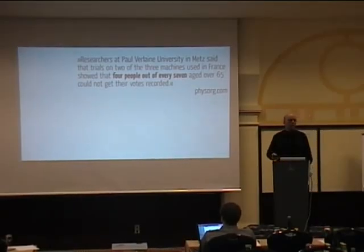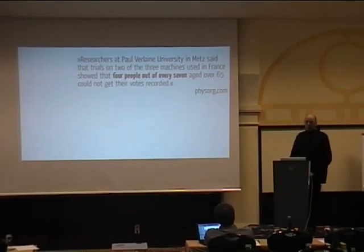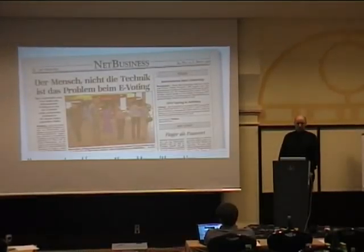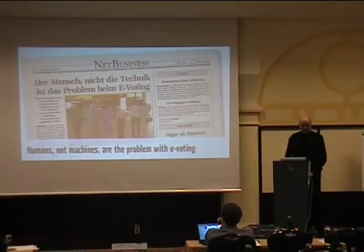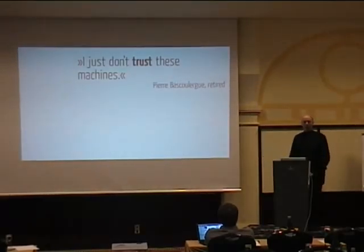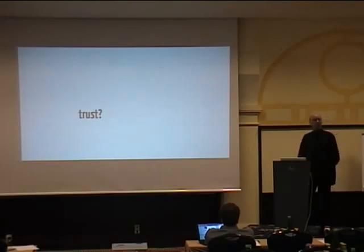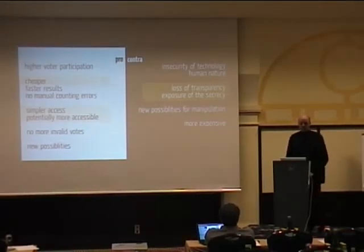Of course, this is a problem we could potentially fix — we could build machines and make it very easy to vote. In response, an Austrian newspaper titled: 'Humans, not machines, are the problem with e-voting.' It says in fine print that electronic voting systems have worked well during the US election, but skepticism still prevails. This is reflected in the retiree who says, 'I just don't trust these machines.' That's a very interesting point — why do we have to speak of these machines in terms of trust? Why do we have to trust the machines? And that's the fourth point: the loss of transparency and exposure of secrecy.